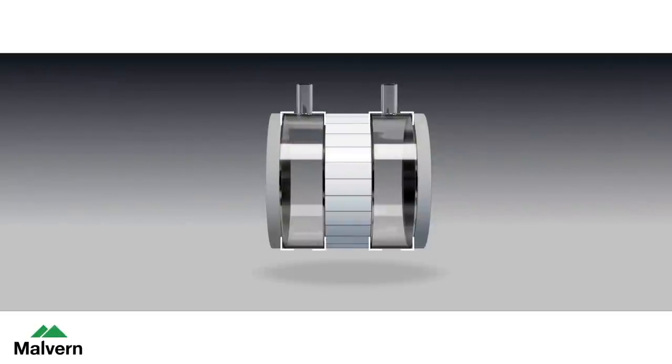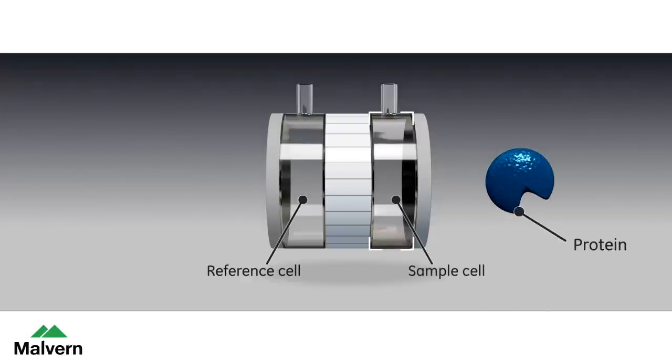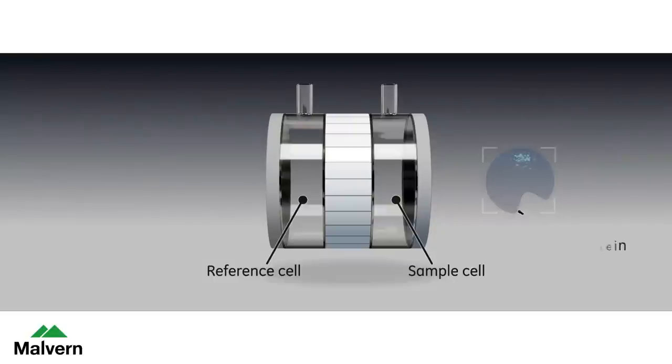In the microcalorimeter there are two cells, one of which contains water and acts as the reference cell, and the other may contain a protein and is called the sample cell. The microcalorimeter needs to keep these two cells at exactly the same temperature.